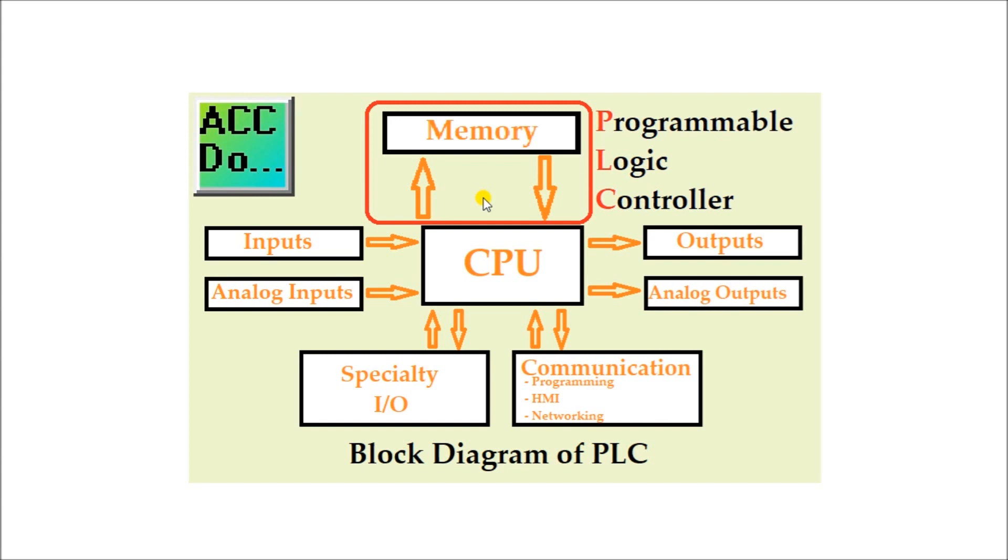There are basically two types of memory. RAM means random access memory. This is the quickest form of memory and is used to run your PLC program. ROM means read-only memory. This form of memory is used to store the PLC firmware and other data that must be present for the controller to operate.